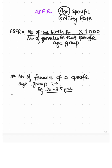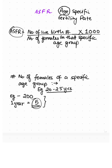Let us take an example of a village in which the number of females in the 20 to 25 age group is 200, and the total number of child births in one year is 5. If we want to calculate the age-specific fertility rate, it is 5 divided by 200, multiplied by 1000, which equals 25.